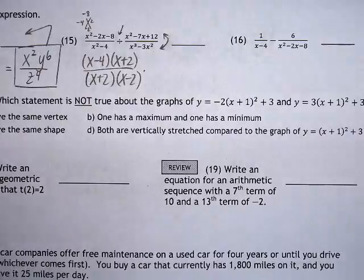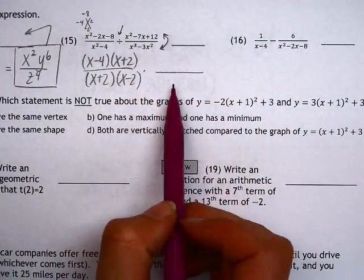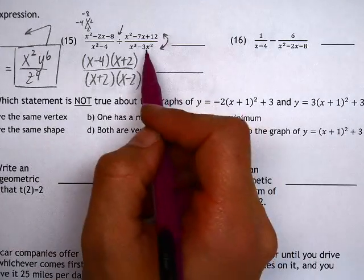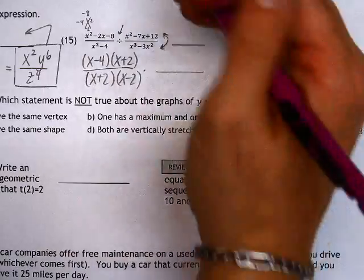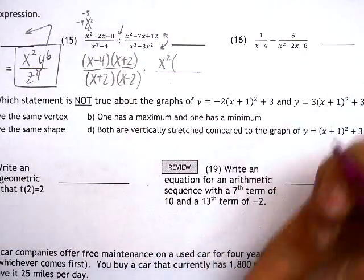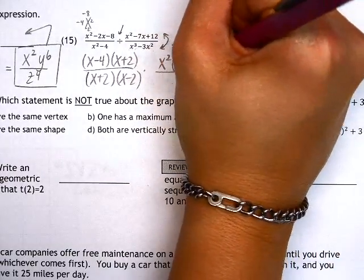Now in the second fraction we're going to flip, which means the top is going to go to the bottom and the bottom to the top. Let's look at the bottom first because now that's the top. x³ - 3x², they both have x² in common. If we take out that x² in common, that leaves us with x - 3.